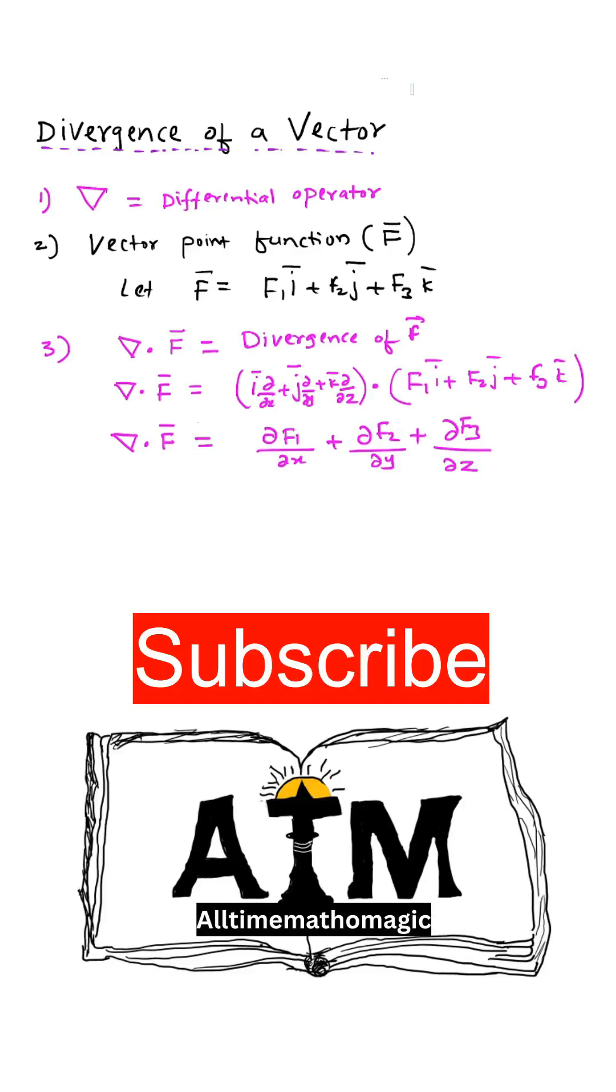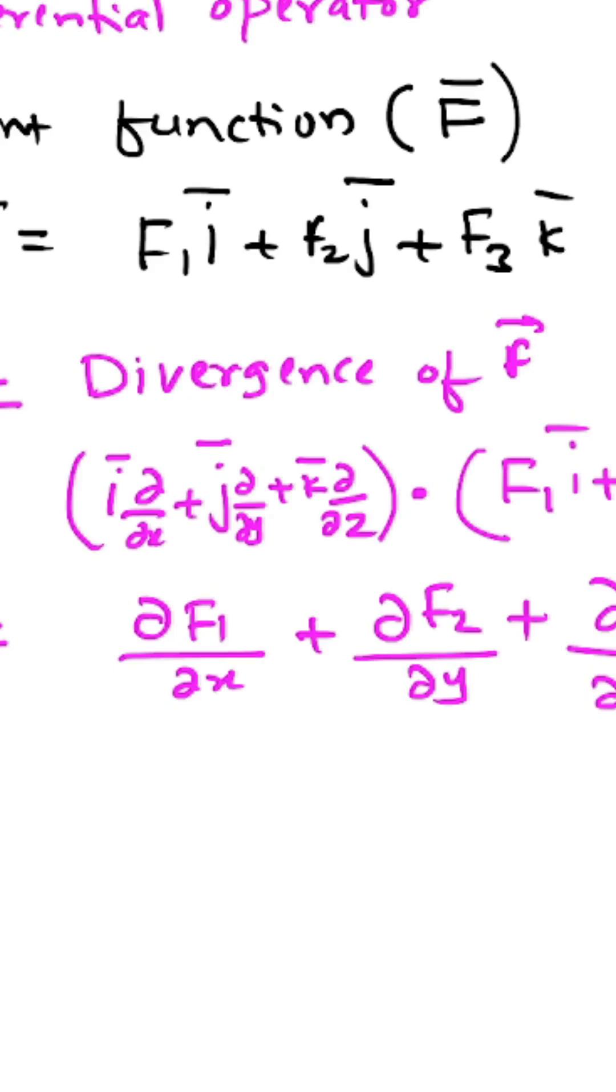Divergence of a vector is obtained by using the differential operator. The value of the differential operator is given by i ∂/∂x plus j ∂/∂y plus k ∂/∂z. This value is called the differential operator.